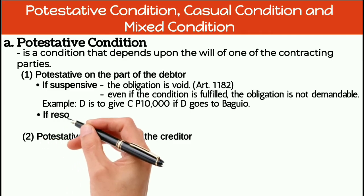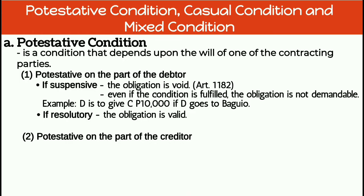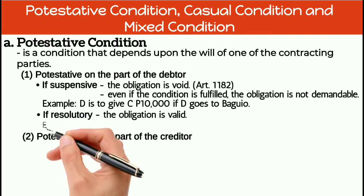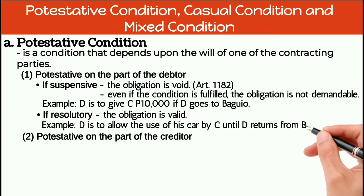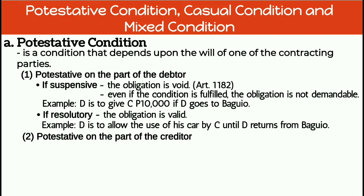If resolutory, the obligation is valid. So if the condition depends on the will of the debtor and the condition is resolutory, the obligation is valid. For example: D is to allow the use of his car by C until D returns from Baguio. D is the debtor and C is the creditor. As you can see, the condition depends on the will of the debtor. But take note, the condition here is resolutory — that's why the obligation is valid.